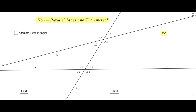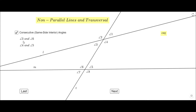Let me uncheck and move to the next one, which we call consecutive or same-side interior angles. Either name helps us identify them: they should be interior angles — three, four, five, and six — and on the same side. So the pairs are four and five, and three and six. Consecutive means one after the other, so angle three and six are consecutive, and four and five are consecutive.